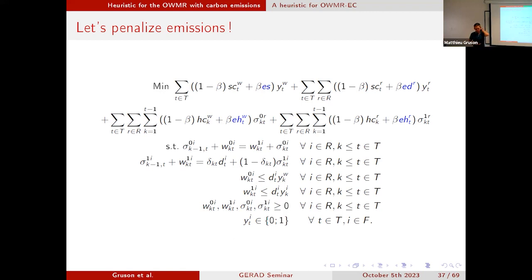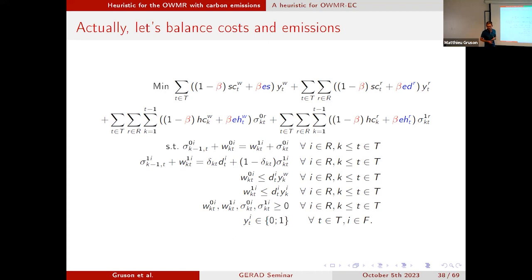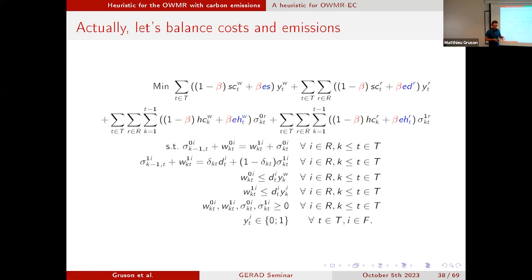What I actually wrote in the model is that we balance the emissions with the different costs, because this beta parameter also appears in front of the different costs — setup costs and inventory holding costs. Our idea of the heuristic is to play with this parameter beta.